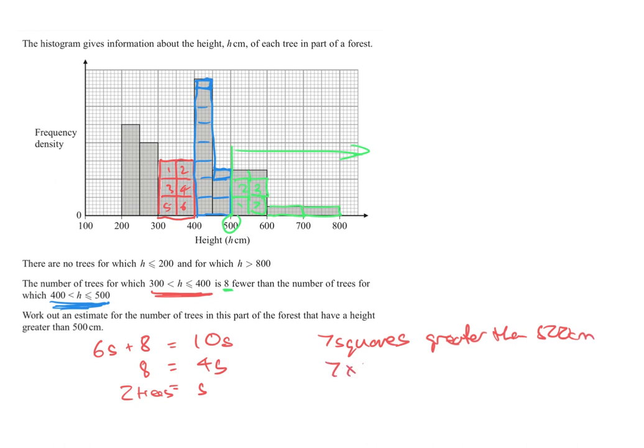So 7 times 2, because it's 2 trees per square, equals 14 trees.